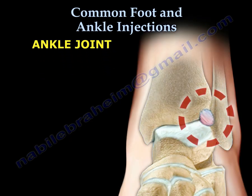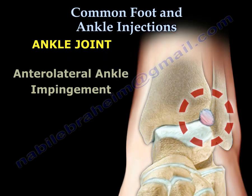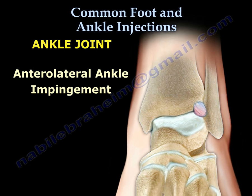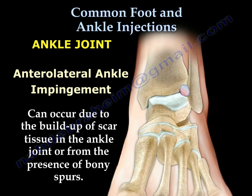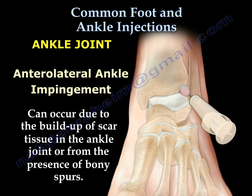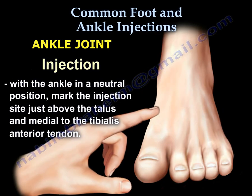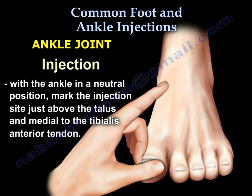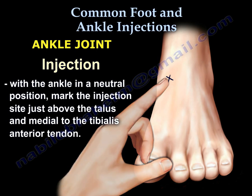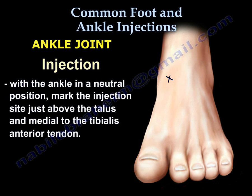Another condition that may need an ankle injection is called anterolateral ankle impingement. It can occur due to the buildup of scar tissue in the ankle joint or from the presence of a bony spur. With the ankle in a neutral position, mark the injection site just above the talus and medial to the tibialis anterior tendon.